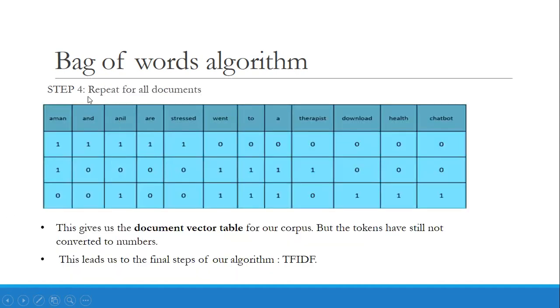Now in step four, since we have three documents, we will create the document vector table for all three documents. The first document is 'Aman and Anil are stressed,' so the remaining values are zeros. In document two, 'Aman went to a therapist,' the remaining values are also zeros.